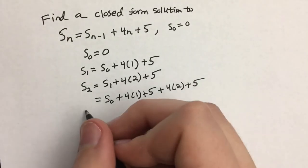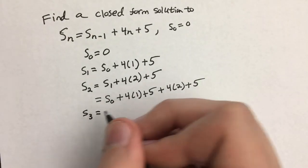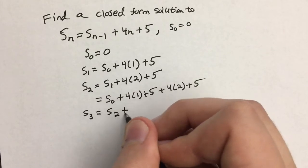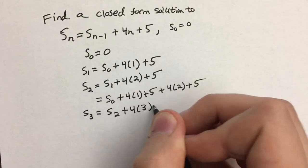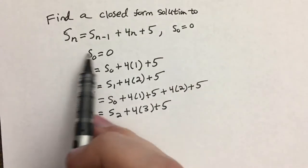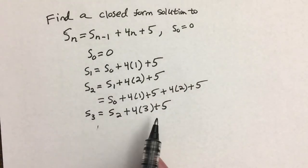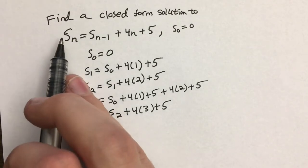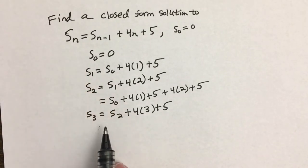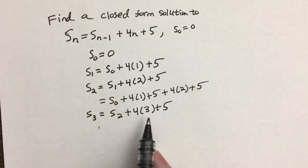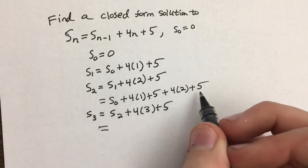I'm going to do one more here before I start cleaning this up a little bit. This is S sub 2 plus 4 times 3 plus 5. Just look back at this original recurrence relation and make sure you can see where I'm getting this from. I'm just taking the equation and I'm putting 3 in for n to find this third term here.